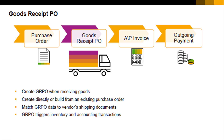In most companies, the person in the warehouse or the office responsible for taking delivery of shipments executes the goods receipt PO. If a goods receipt PO is used when purchasing services, the person for whom the services are rendered usually issues the document.